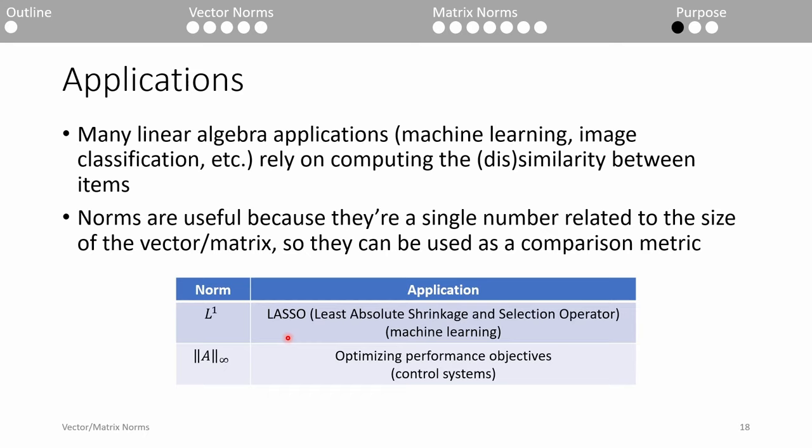When you do LASSO regression, you penalize the less important or less prominent parts of your dataset. This prevents overfitting your data and makes your model more versatile when applied to other datasets. The penalization is computed using the L1 norm.